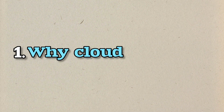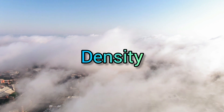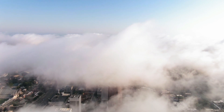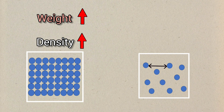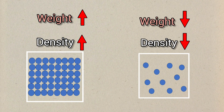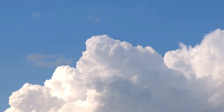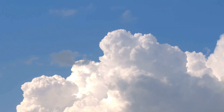First, why does a cloud float? The primary factor responsible for the floating of a cloud is density. In simple words, density is the arrangement of particles and how closely they are packed together. When particles are closely packed, density increases, which increases the overall weight of the object. If particles are packed but there is a gap between them, density is lower, which decreases the overall weight. Clouds have more water content, but the particles in the clouds are less dense than the air below the cloud, so that's why the cloud floats.